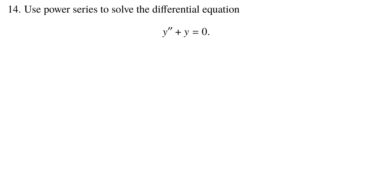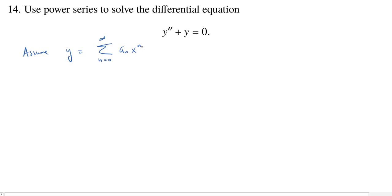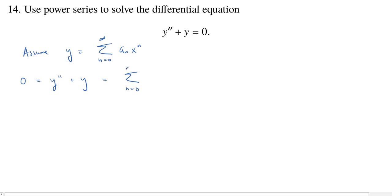When finding a power series solution, we assume that y has a power series: y = sum from 0 to infinity of a_n x^n. Then we write 0 = y'' + y. By the theorem that lets us differentiate a power series term by term, we take two derivatives term by term, pulling down n and then n−1, giving a_n x^(n−2).